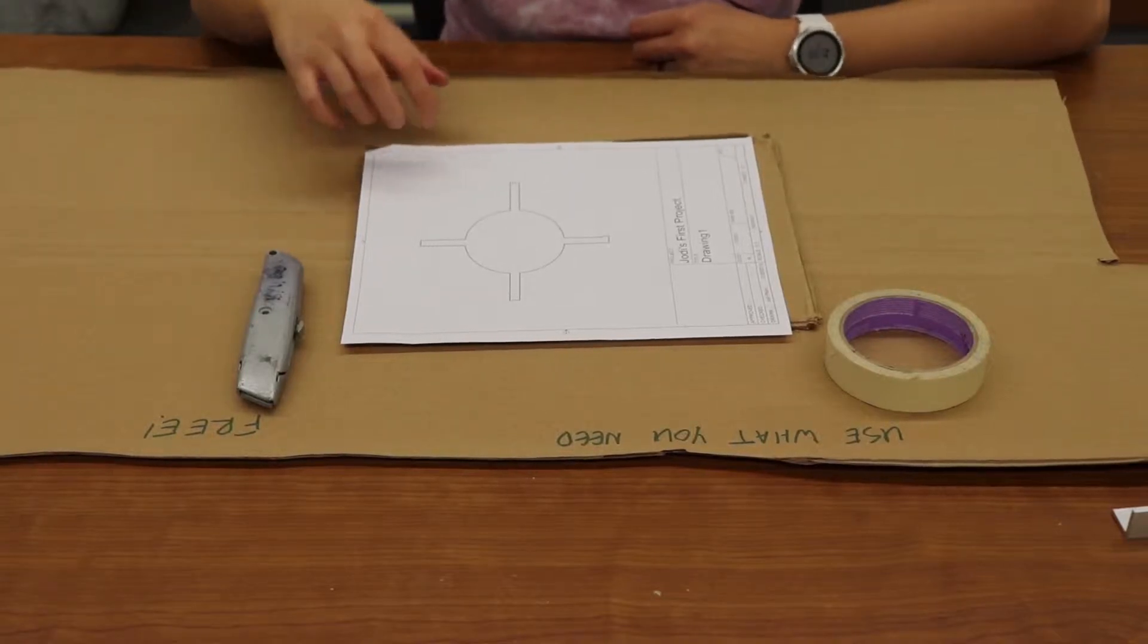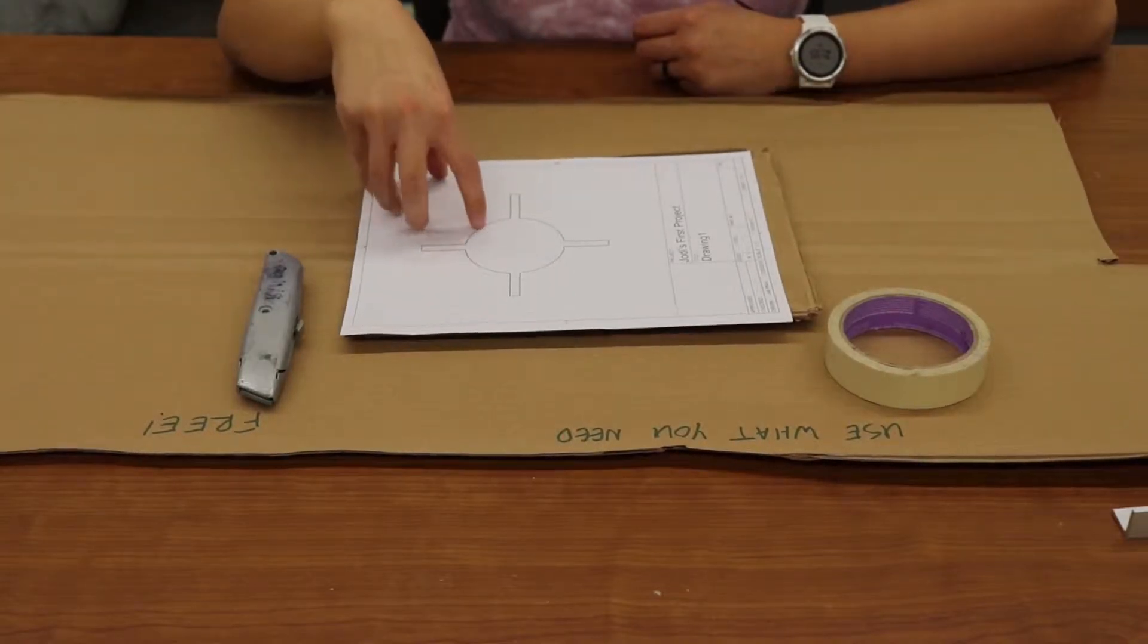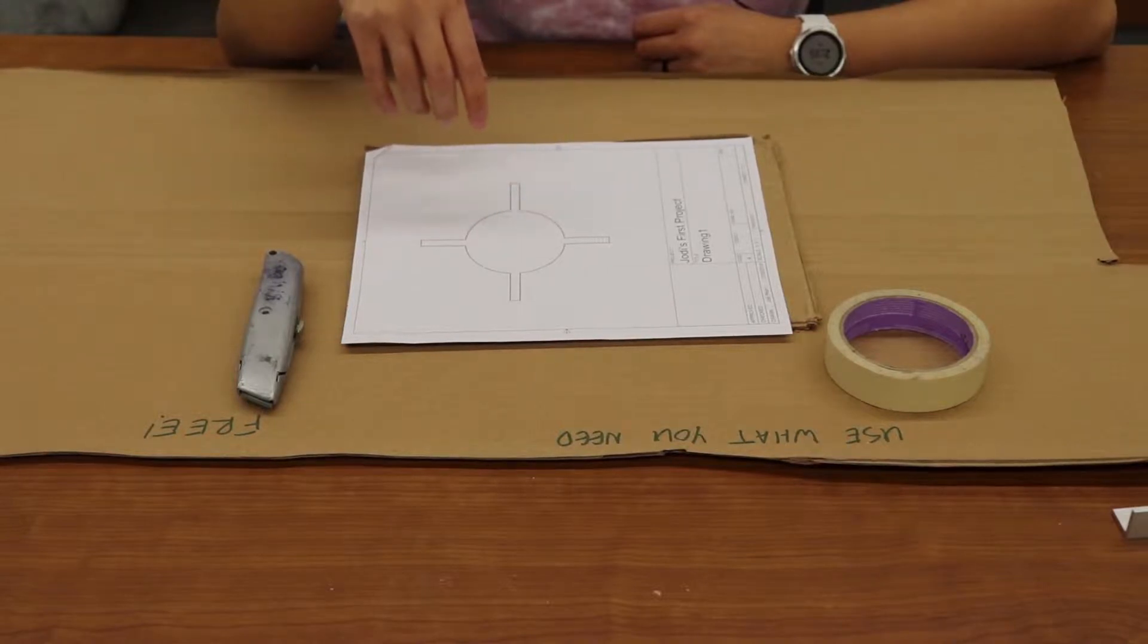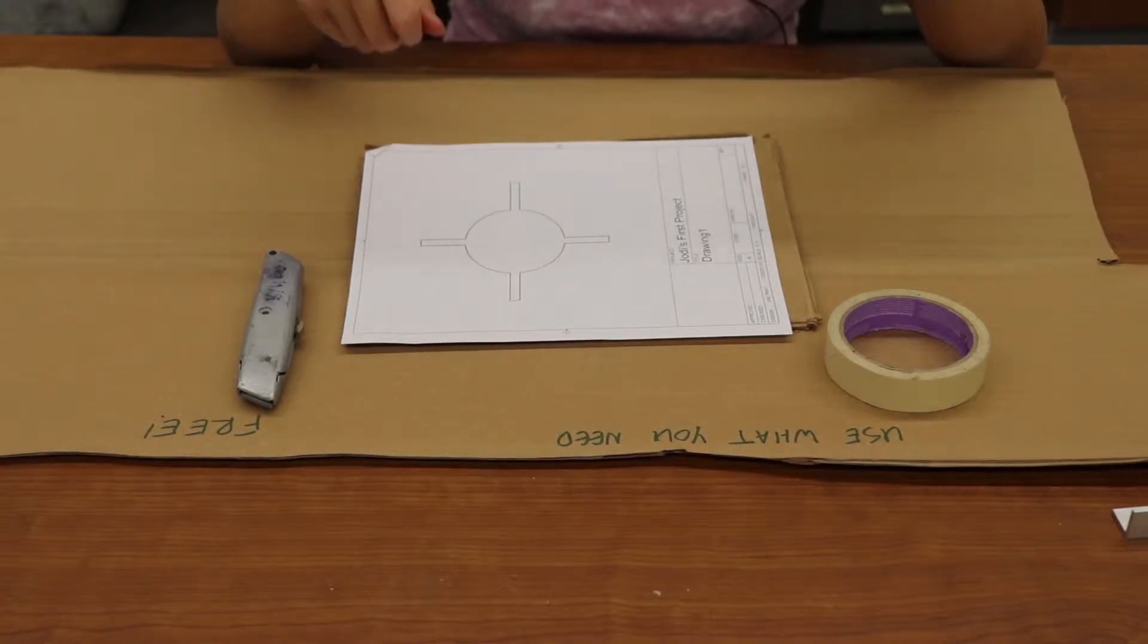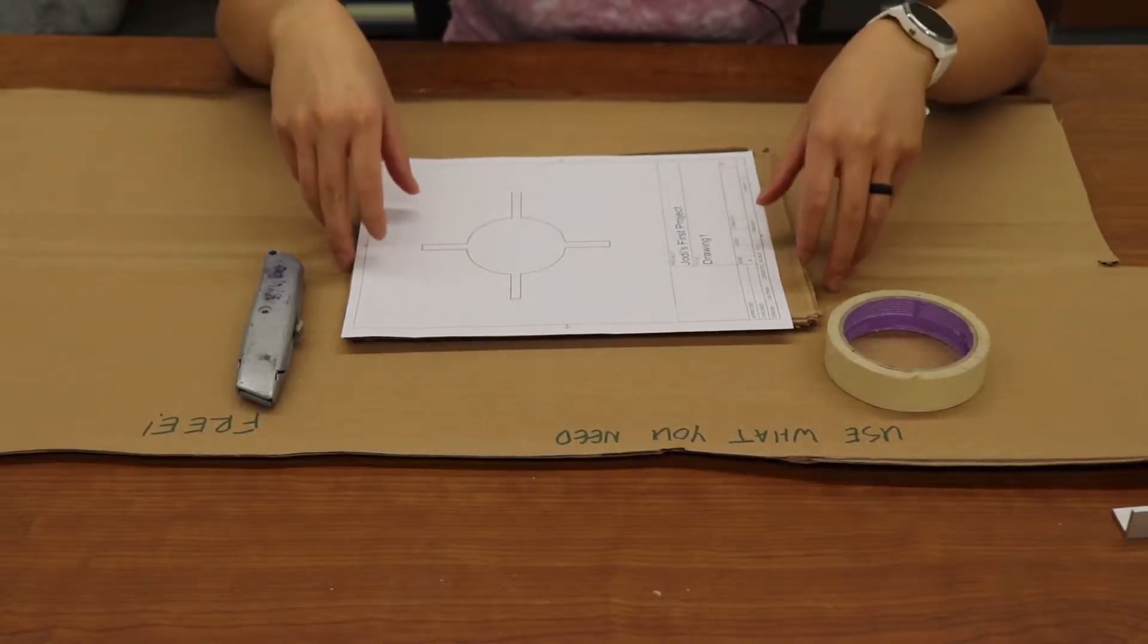Hey guys, in this video I'm going to show you how to cut out your fin alignment jig and how to glue your fins onto your body tube. A fin alignment jig helps you keep your fins in place while they are drying once you put glue on them.